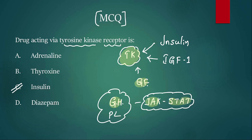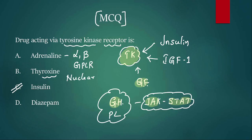Adrenaline acts through alpha and beta adrenergic receptors, which are G-protein coupled receptors. Thyroxine belongs to the nuclear receptor superfamily. Diazepam acts through GABA-A, which is an ion channel receptor.